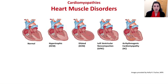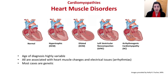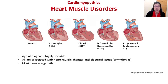Cardiomyopathies are a general class of heart muscle disorders. Here I'm showing you pictures of what the heart can look like, with the leftmost picture being a depiction of the structurally normal heart. Cardiomyopathies are highly variable in the age of diagnosis. They are all associated with heart muscle changes and electrical conduction abnormalities or arrhythmias, and most are genetic.